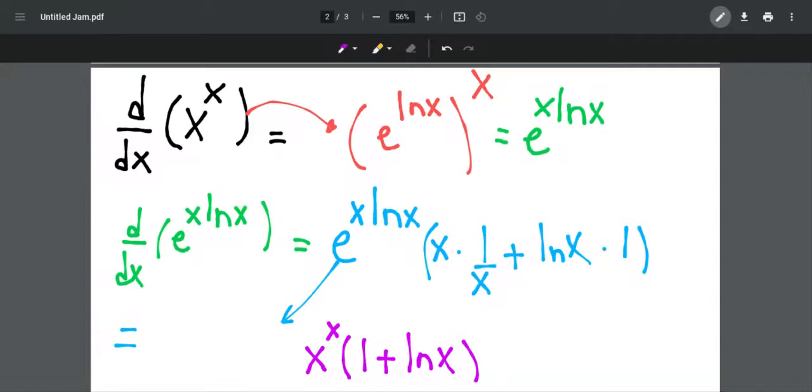The first step for differentiating this expression is to write x as e to the power of ln x. Why? Because it makes our calculation easier if we use the natural log properties, it will be the same as x.